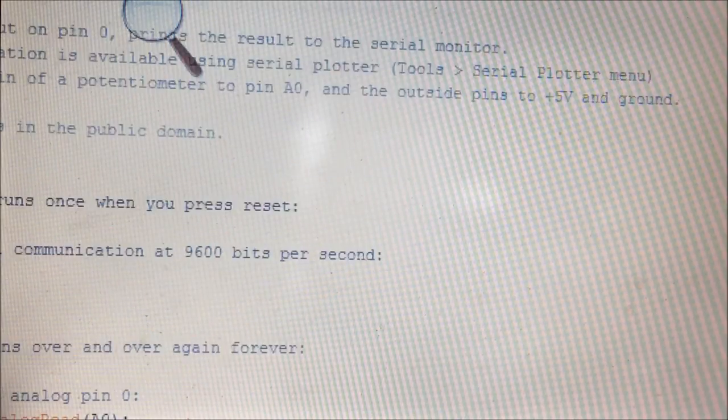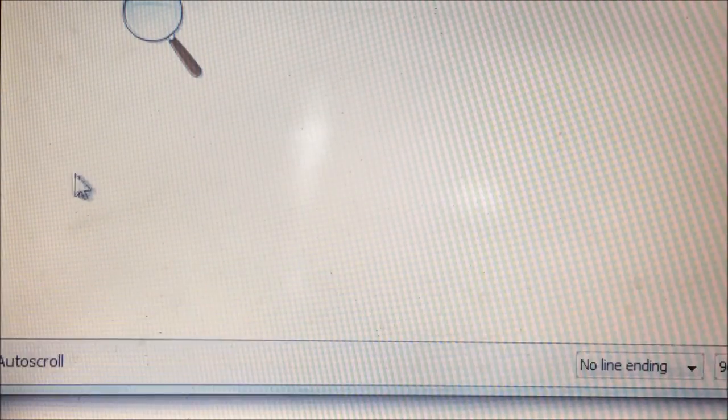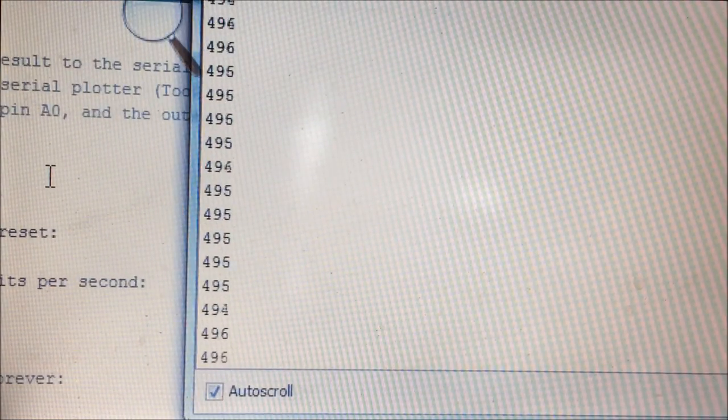To check the value of the output of the ADC, I'll open the serial monitor here. And I have already flashed the same program onto the Arduino. So if I open the serial monitor, you can see the values coming as 496.